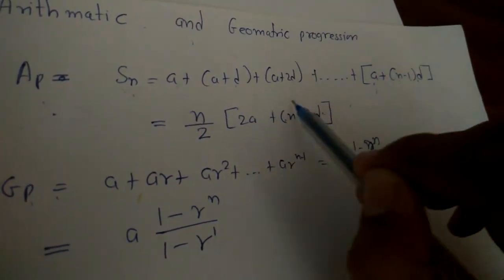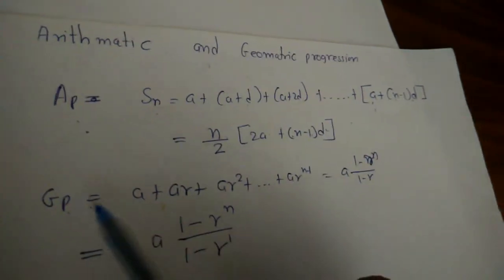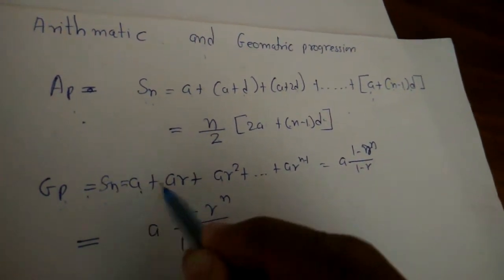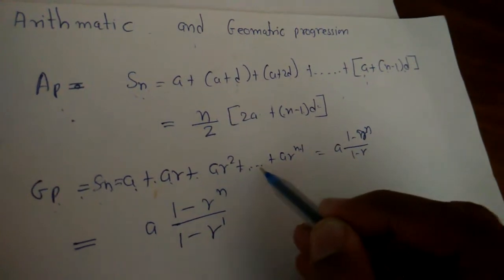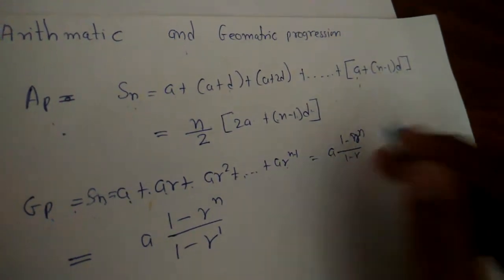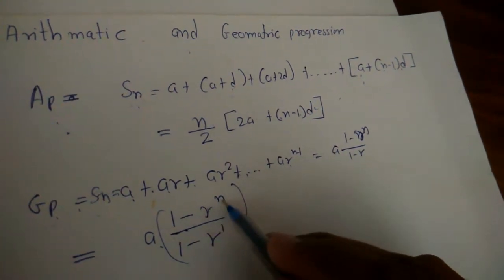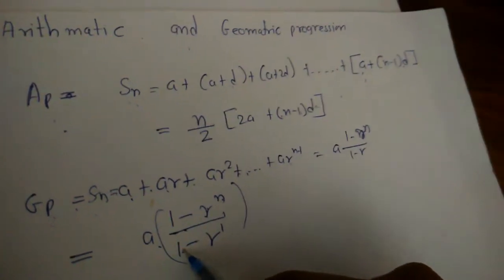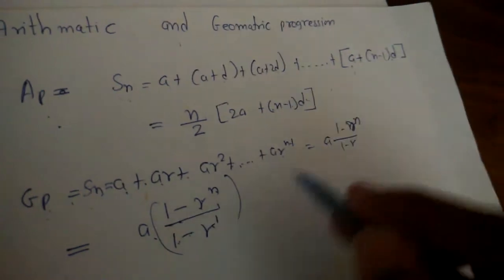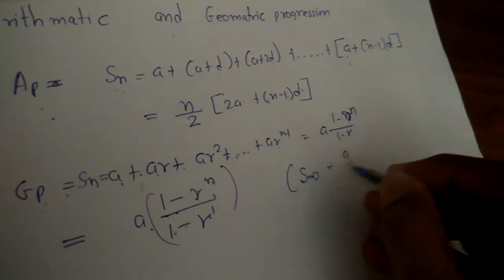This is geometric progression. The sum of n terms is a plus ar plus ar squared plus dash dash plus ar to the n minus 1, which equals a times 1 minus r to the n, divided by 1 minus r.